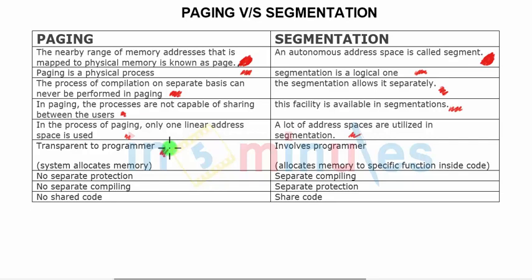In paging there is no separate protection, whereas in segmentation there is protection via the base and limit registers. We do have separate compiling in paging, but there is no separate protection. In segmentation, there is separate protection but no separate compiling.